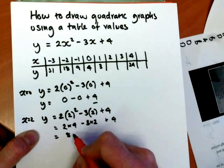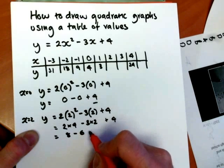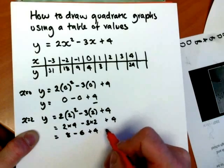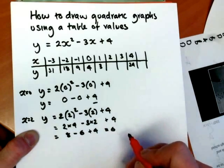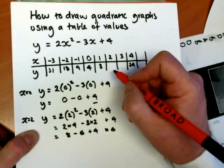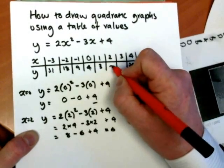This equals 8 subtract 6 plus 4. 8 take 6 is 2, and 2 and 4 is 6. So when x equals 2, y equals 6.